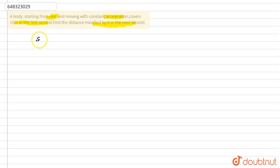Here we use an equation like this: S_n = u + a(n - 1/2).